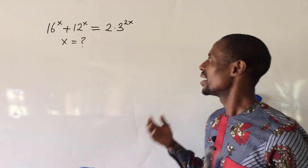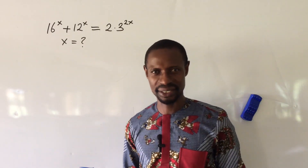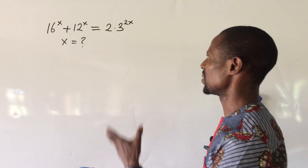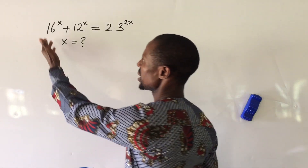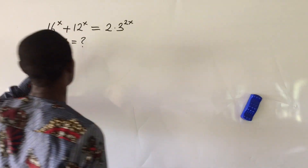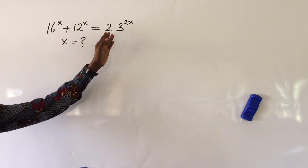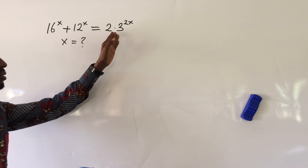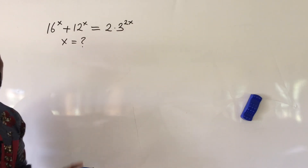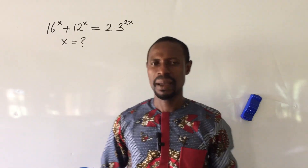Here we have a challenge on the board. It's an olympiad mathematical challenge. The question reads: 16 to the power of x plus 12 to the power of x equal to 2 times 3 to the power of 2x. What would be the possible value of x?